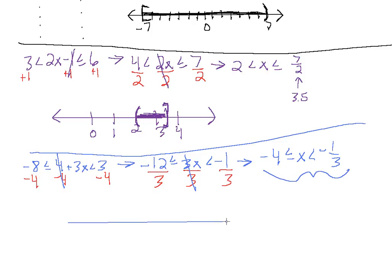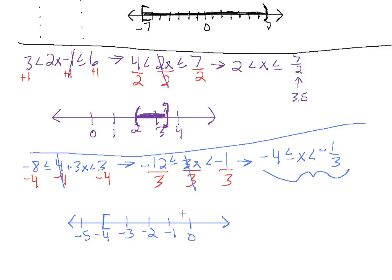Now let's draw our number line. We place −2, −1, 0, −3, −4, −5 on the line. All solution values are in between −4 and −1/3. We include −4 in our solution set because of the less than or equal to sign, so we put a bracket at −4 opening to the right. At −1/3 we put a parenthesis opening to the left because we're excluding it. We shade everything in between — that gives us our solution interval.